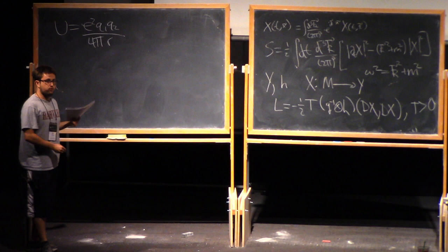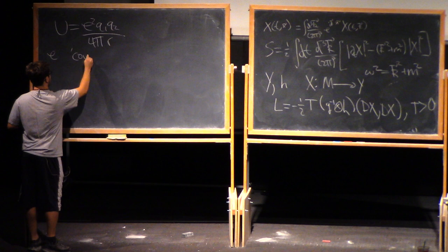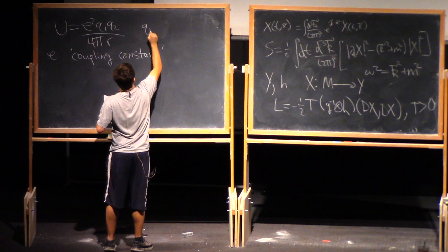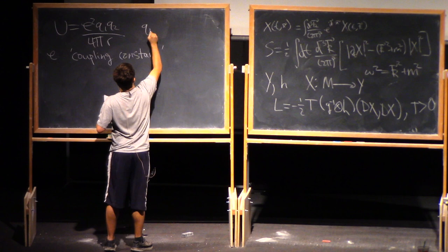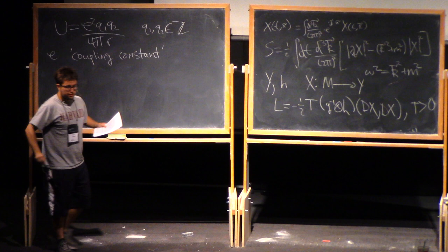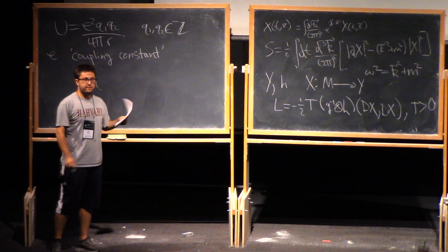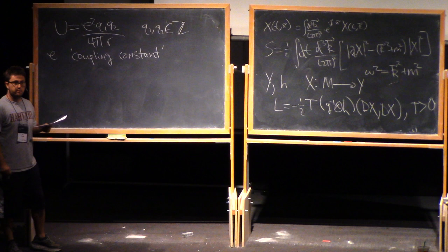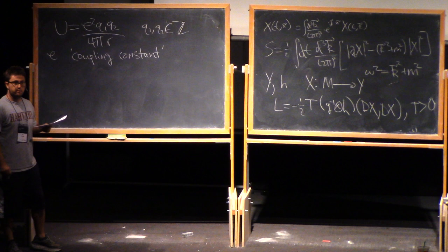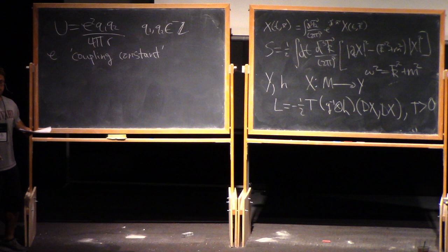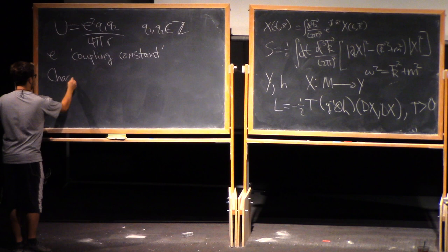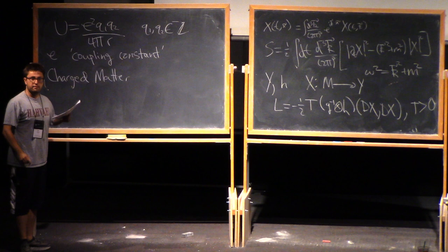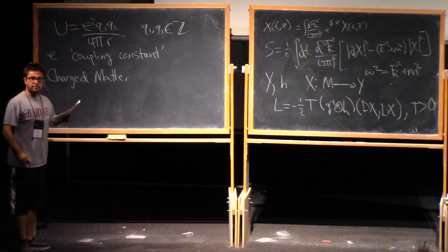And here, this e is the same e that showed up over there. So e is what we call the coupling constant, and it determines the strength of the force. So e is the coupling constant. And I've written this in such a way that Q1 and Q2 are both integers. So this is maybe a fact that's not taught a lot in electromagnetism courses, but this is just an experimental fact. Every charge that we've ever observed in nature, has an integer multiple of the electron's charge. So that might sound incredibly bizarre, but that actually has a natural explanation in terms of gauge theory. So in order to explain that, let me explain what it means to have some charged matter, like electrons, for example.